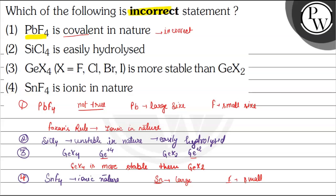So the incorrect statement is PbF4 is covalent in nature, while it is actually ionic in nature. That's why the more appropriate answer of this question is option number one.